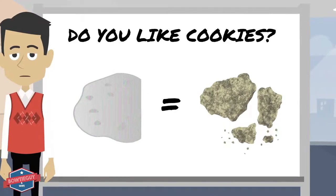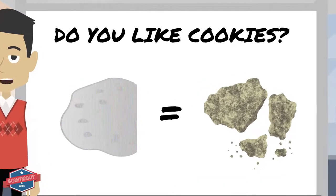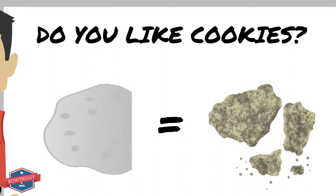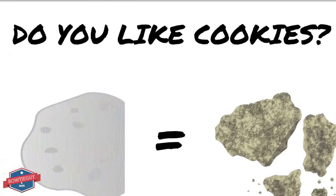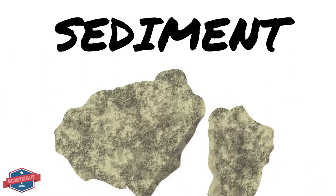Do you like cookies? I sure do. My favorite is the chocolate chip cookie. The chocolate chip cookie has a lot in common with sedimentary rocks. How? Both are made of many different ingredients that are pressed together to form one unit.